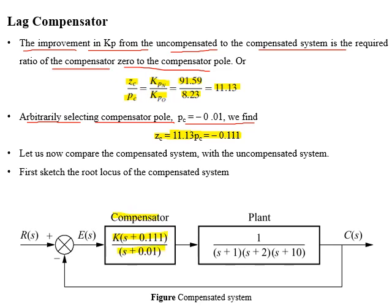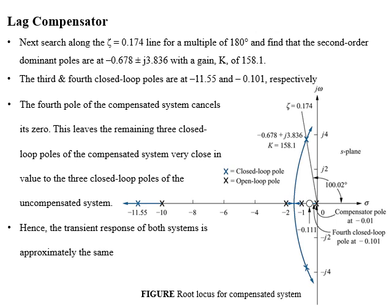Now we will compare the compensated system with the uncompensated system by sketching the root locus for the compensator. The figure represents the root locus for the compensated system. We draw a radial line corresponding to a damping ratio of 0.174, and search for the location where the root locus intersects this line of constant damping ratio — that is our desired location for closed-loop system poles. This intersection is at −0.678 ± j3.836 with a gain of 158.1.